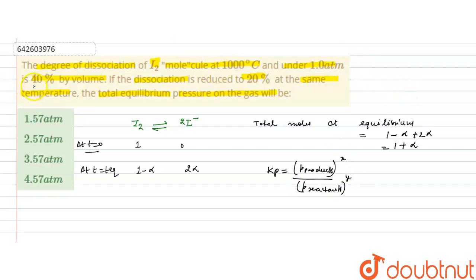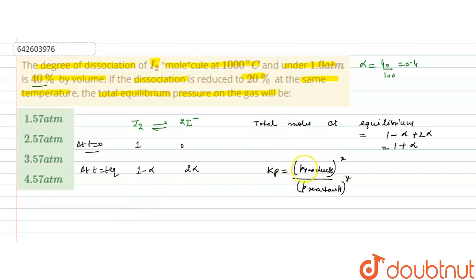It is given that the degree of dissociation is 40%, so α = 40/100 = 0.4. We can now write Kp as the partial pressure of the product I, raised to the power of its stoichiometric coefficient (2), divided by the partial pressure of I₂.